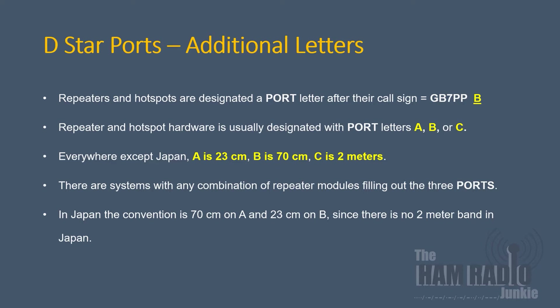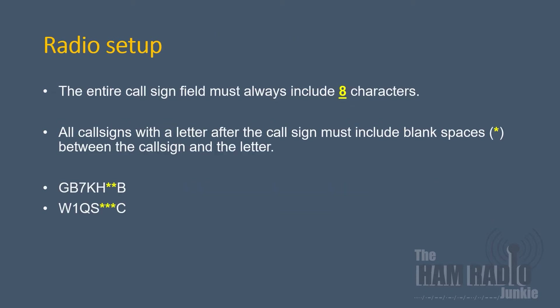Before we do, it's important to know that all hardware that operates on a D-Star network is allocated an extra port letter that follows its callsign. This is allocated depending upon which band it actually operates on. For instance, GB7PP is a D-Star repeater on 70cm and therefore gets port B. If it was on 2m, it would have port C. There are repeaters around the world that operate on bands A, B, and C and therefore have all three letters allocated to their callsign.